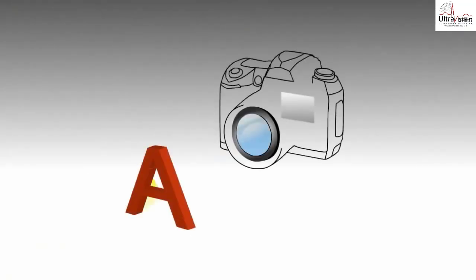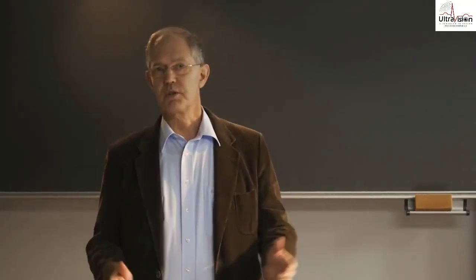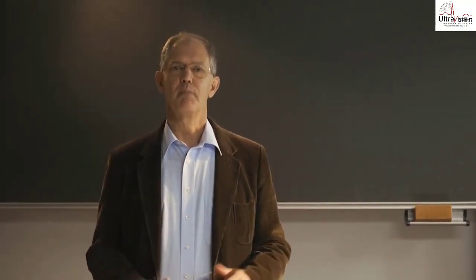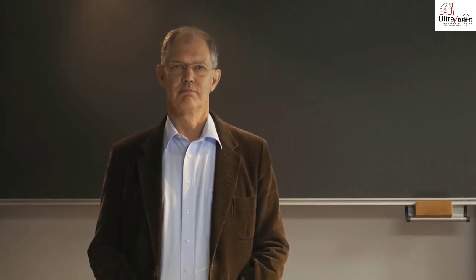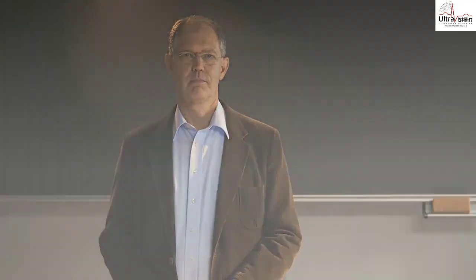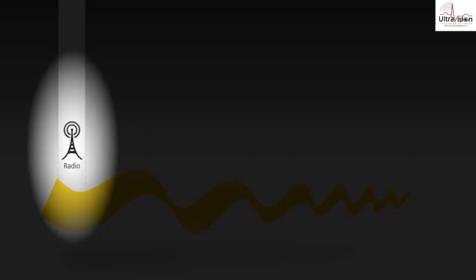On a camera, the light gets focused through a lens, which opens and shuts very quickly onto a light-sensitive chip, and this captures the image. Of course, with an x-ray system, it's not light but x-rays. X-rays are a form of radiation — in fact, all forms of electromagnetic waves are radiation. That's where the word radio comes from.